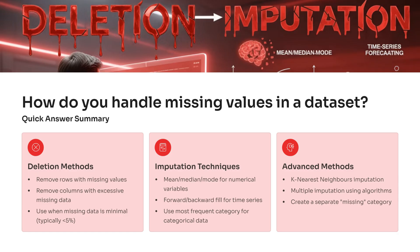There are three main categories of approaches. First, deletion methods. You remove rows or columns with missing values when the amount of missing data is small, typically less than 5%. This method works best when the data loss won't distort your analysis.